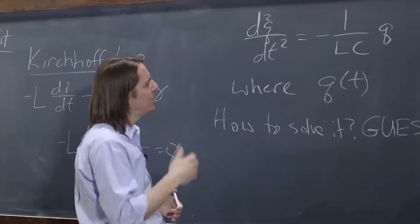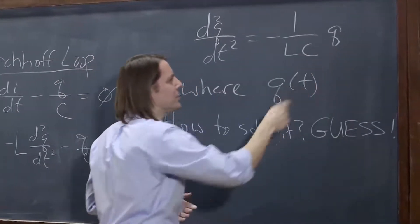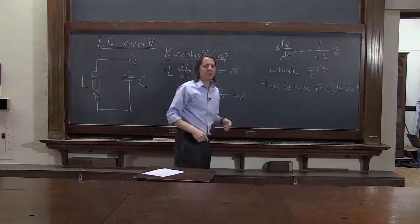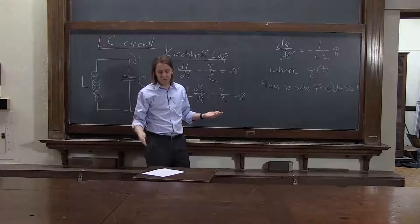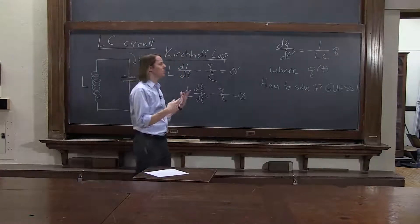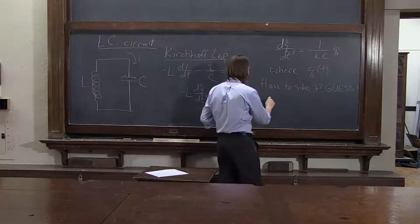Well, you look at it and you say, well, what function is equal to its own second derivative to within a constant? And you just start making up functions and see what you come up with. So let's think, what function do we know is equal to its own second derivative to within a constant?